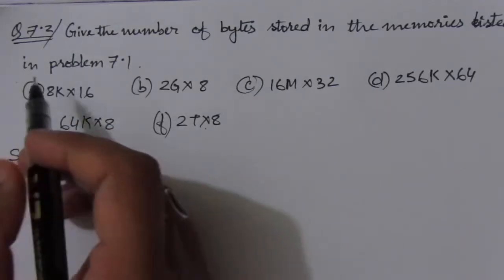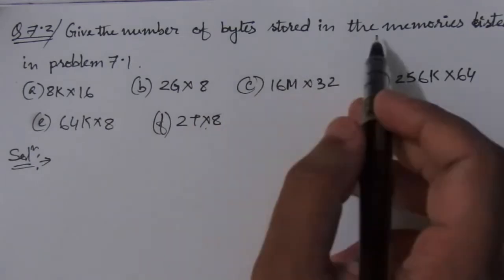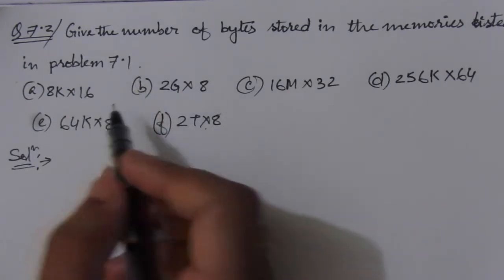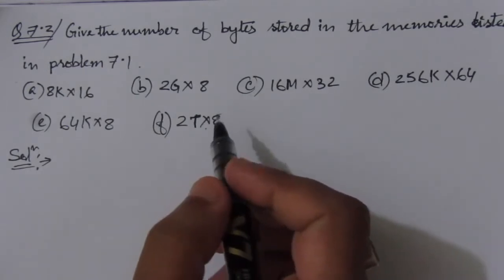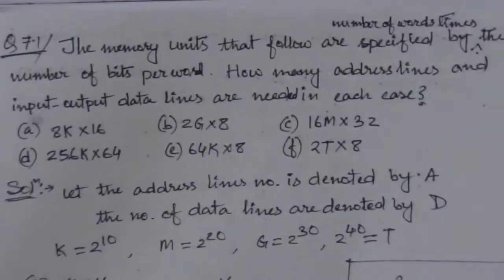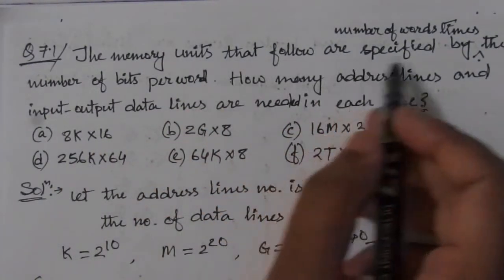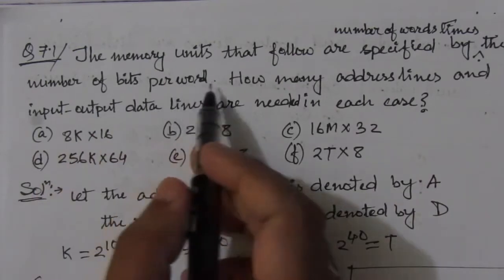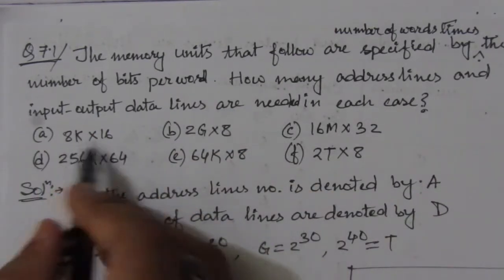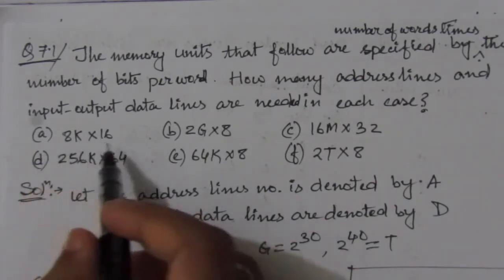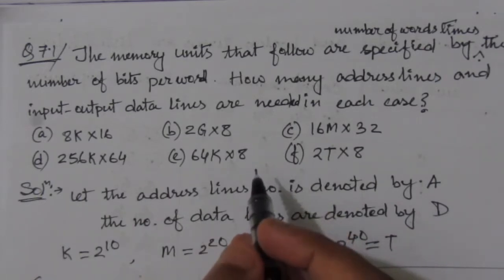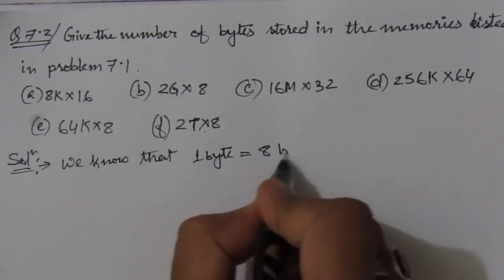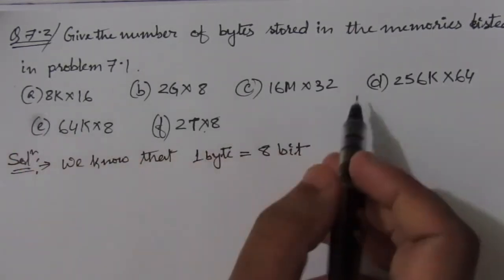Let's start the second problem of chapter number seven. The problem is: give the number of bytes stored in the memories listed in problem 7.1. We have six memory units, and from these we have to find out the number of bytes. The memory units are specified by the number of words times the number of bits per word. We know that one byte is equal to eight bits.